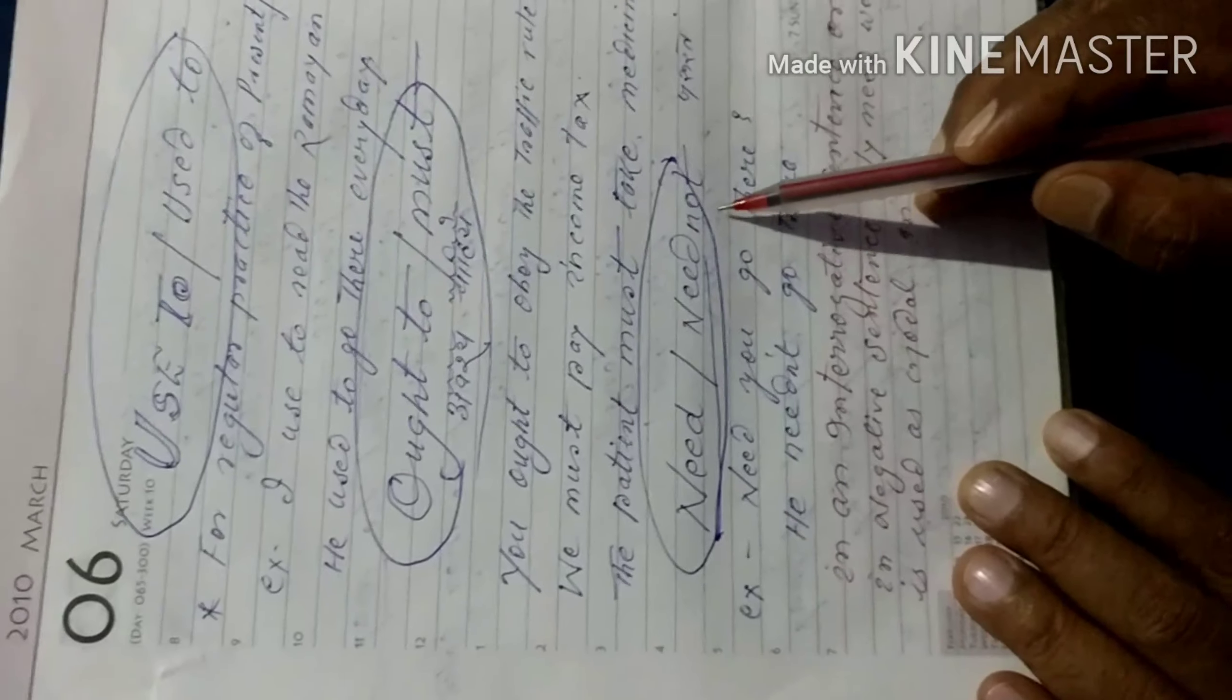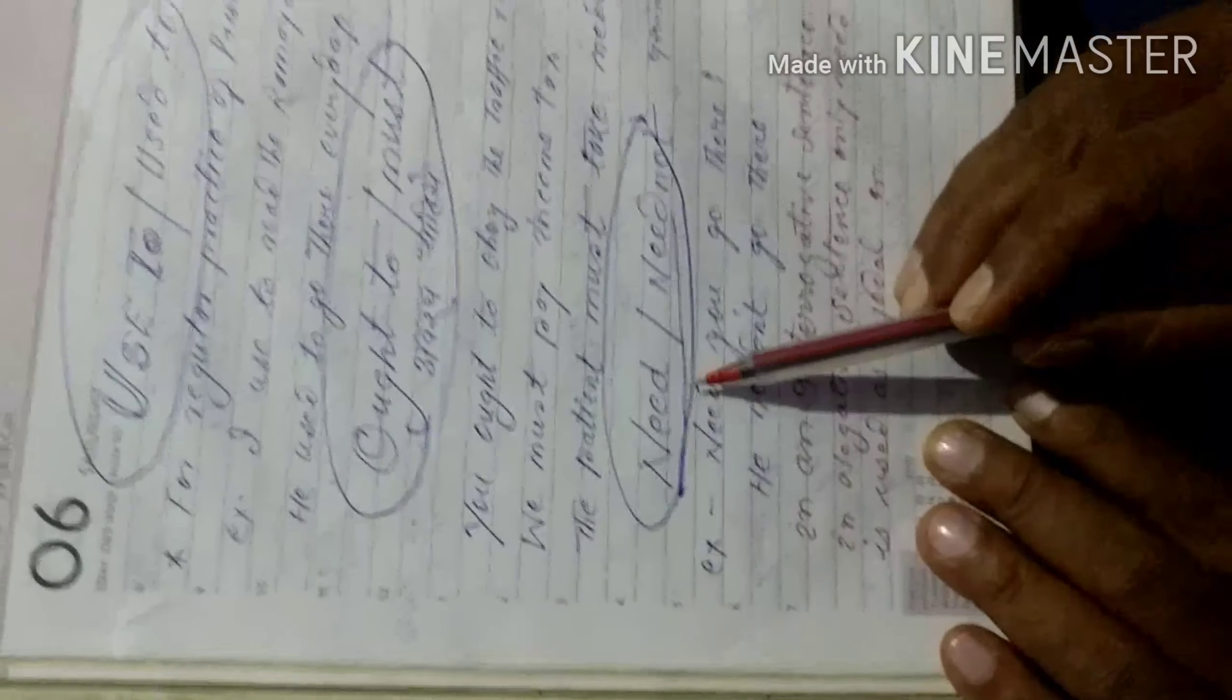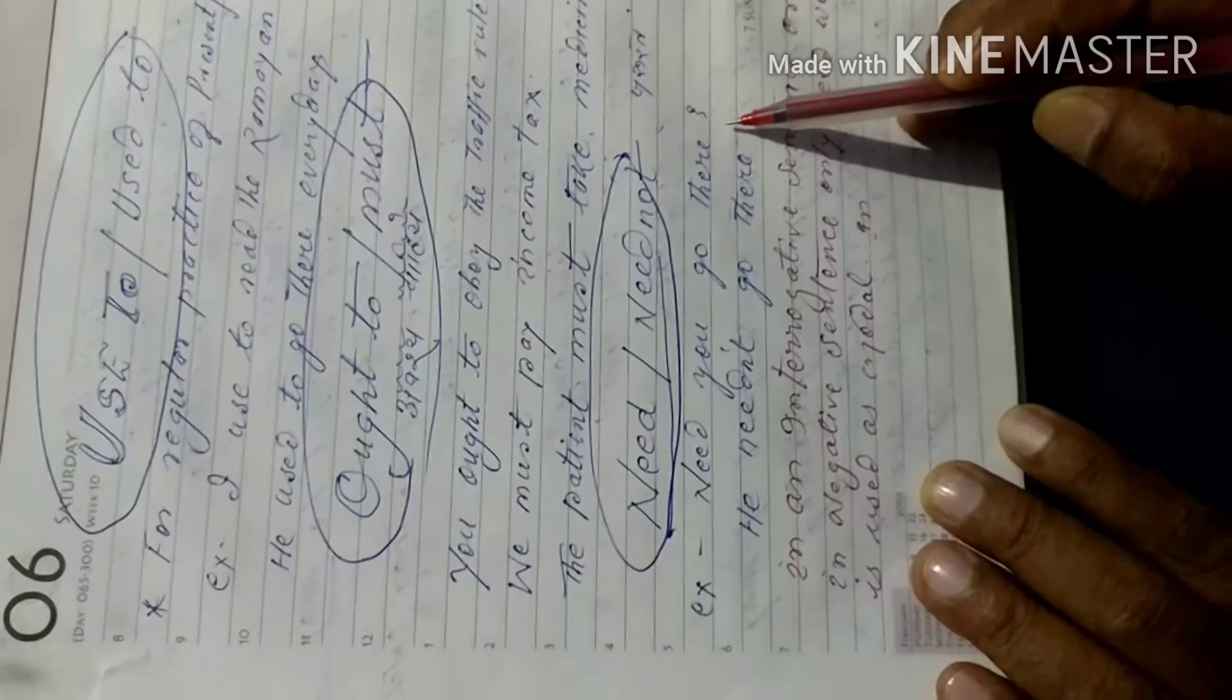Next model is need or need not. Need and need not both are used in interrogative or in negative. For example, need you go there. Or, he need not go there. After need must. Thank you very much. Now, in next class.